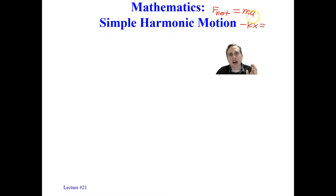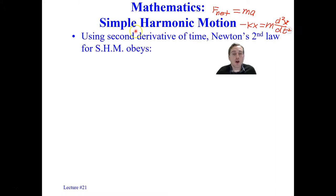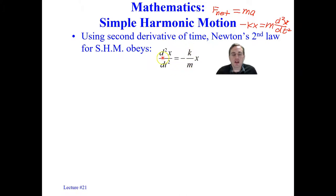Acceleration is the time derivative of velocity, and velocity is the time derivative of position. So we can write: m times d²x/dt² equals minus kx. This is what we call a second-order, ordinary differential equation with constant coefficients — the differential equation for a simple harmonic oscillator. The second derivative of displacement with respect to time equals some constant times the displacement, where that constant is minus k over m.